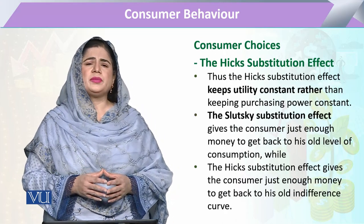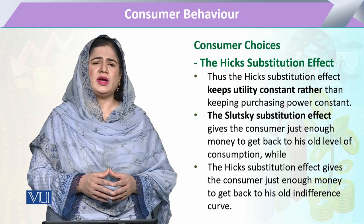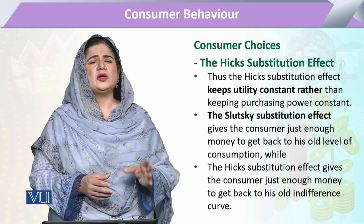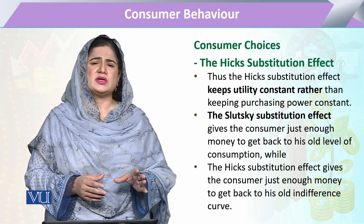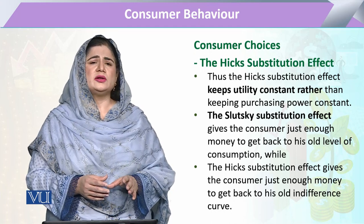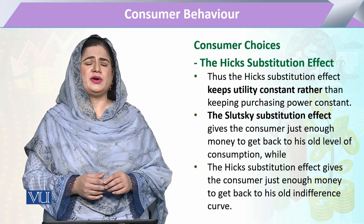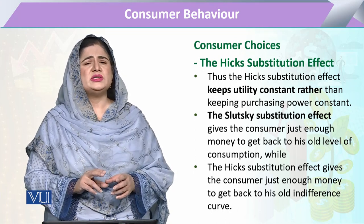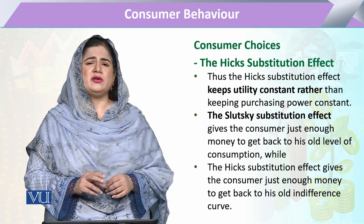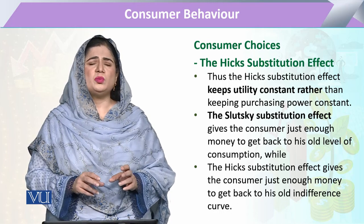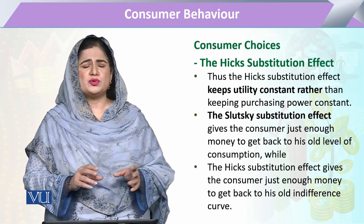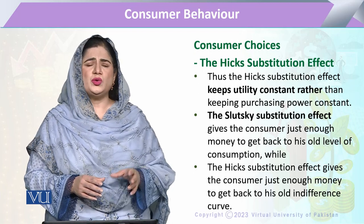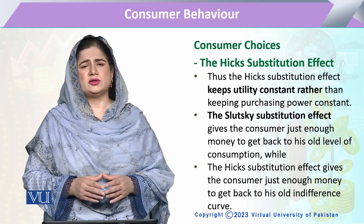The main point to consider in the Hicksian substitution effect is that it is a substitution of the consumer between two points on the same indifference curve, ensuring the consumer is indifferent between these two points. The consumer faces two budget lines but moves along the same indifference curve. These two budget lines show two different slopes, providing the opportunity to the consumer to switch from one slope to the other.